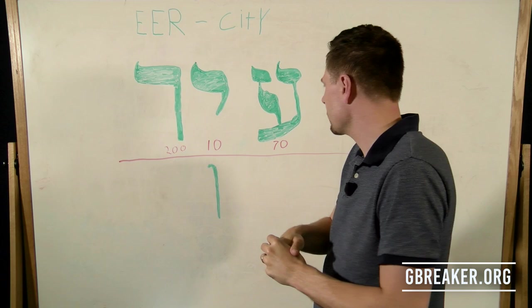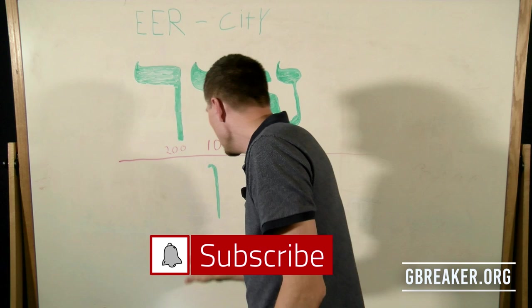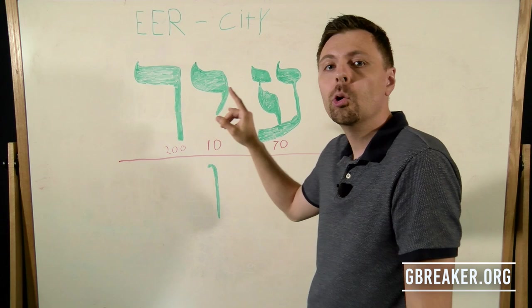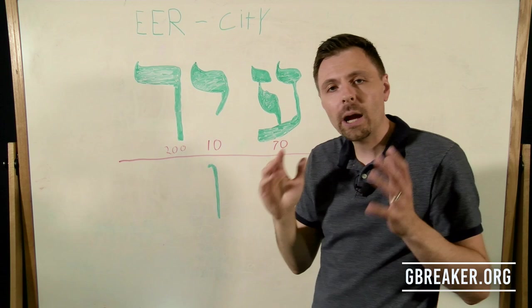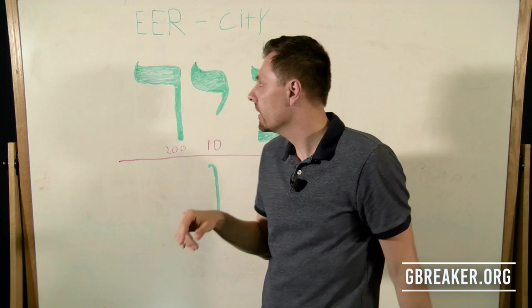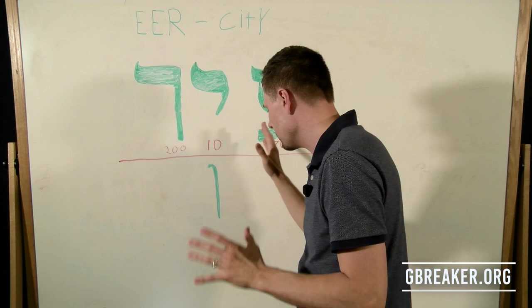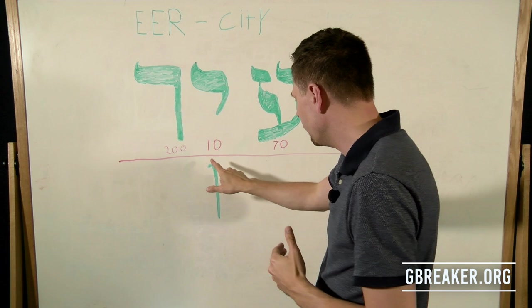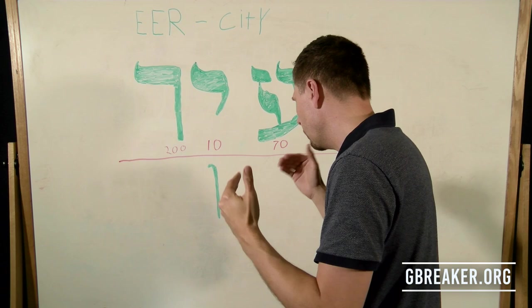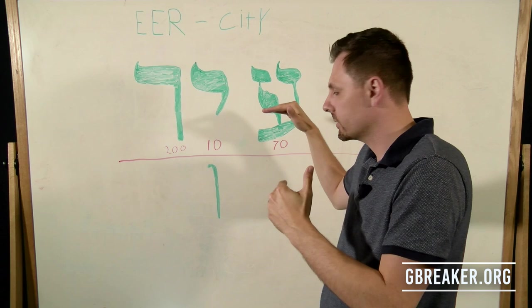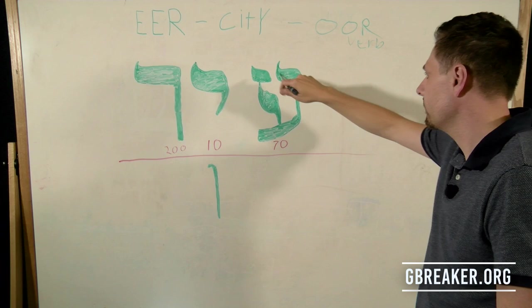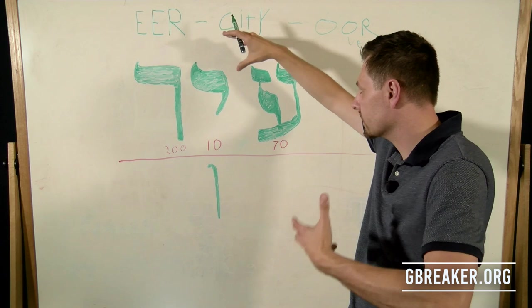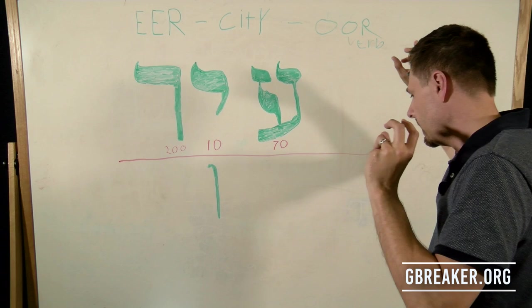Now let's look at this word as a whole. It comes from a root word, and that root word is 'or.' The word 'ear' means city, but it comes from the root word 'or.' The root word means an awareness or an excitement about something. That's interesting — what would that have to do with a city? The word 'or' is the ayin, the vav, and the resh together, and it means to watch and be aware. The 'or' is the verb — to watch or to be aware, something that causes awareness, excitement, or stirring up.